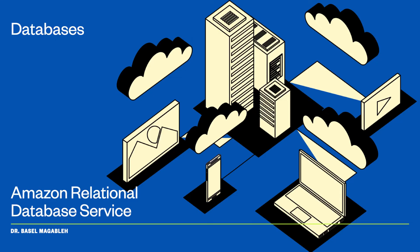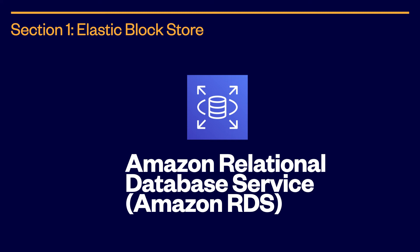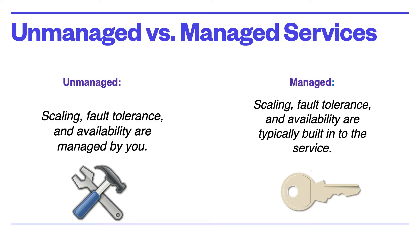In AWS, you can have two types of categories of database systems, whether you choose unmanaged or managed services. In unmanaged services, you will be responsible for scaling, fault tolerance, and availability of the database system. In managed services, scaling, fault tolerance, and availability are typically built into the services, or we call them platform as a service.